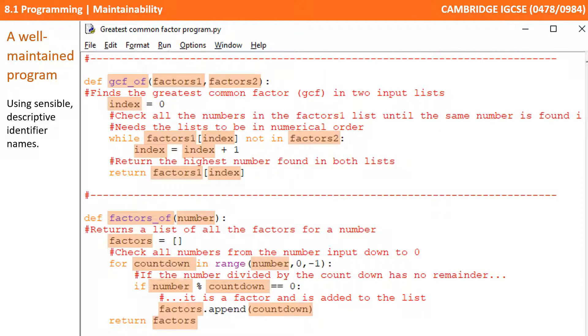We've got rid of all those single letter variable names. We're now using sensible descriptive identifiers also in the parameters and the names of the subroutines.